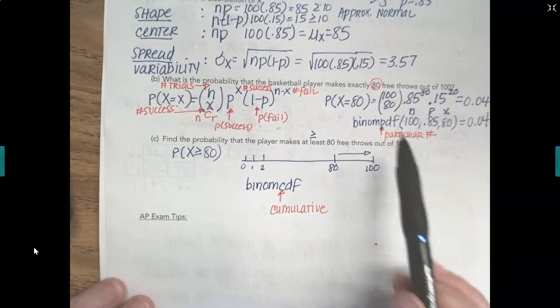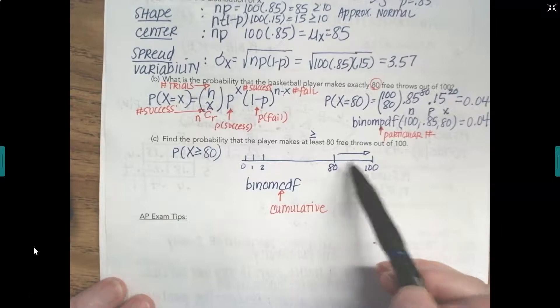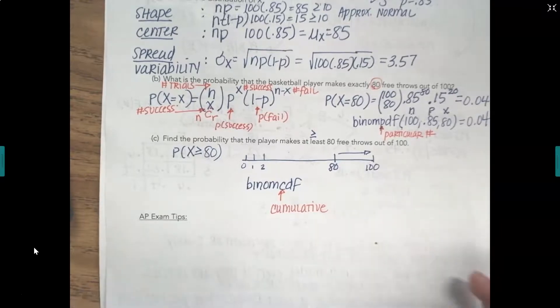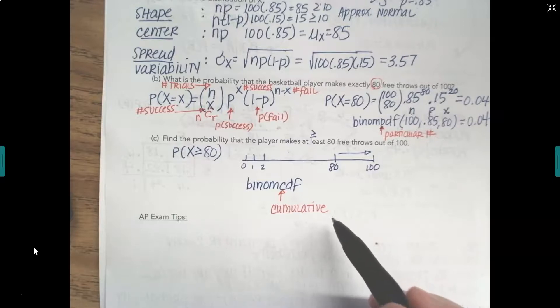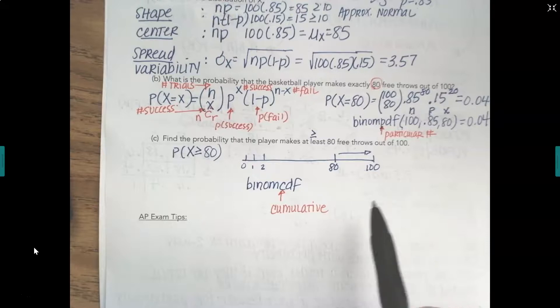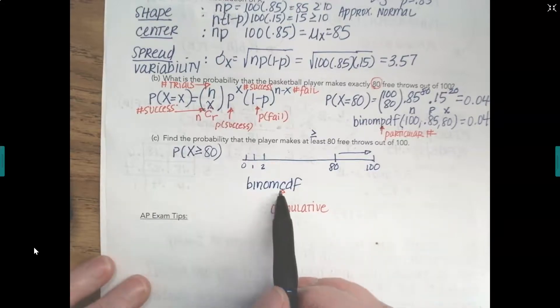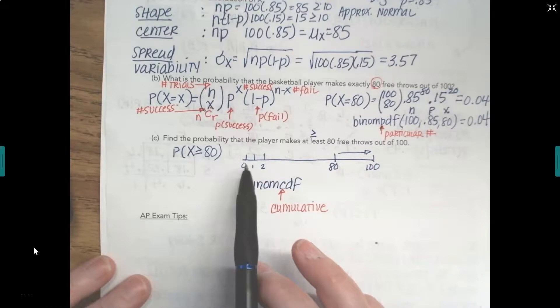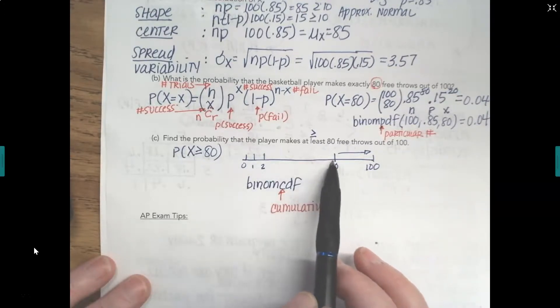But I want to know the probability of making 80 to 100 correct. If we use the PDF function, we'd have to go for 80, 81, 82, 83, all the way up to 100, and then add all the probabilities together. CDF will let us do a range, but we have to remember that if we're doing a range, the cumulative always accumulates from the left. So it starts adding from the left.